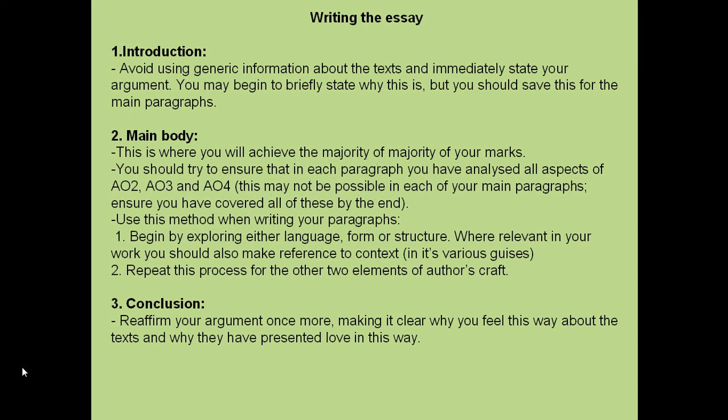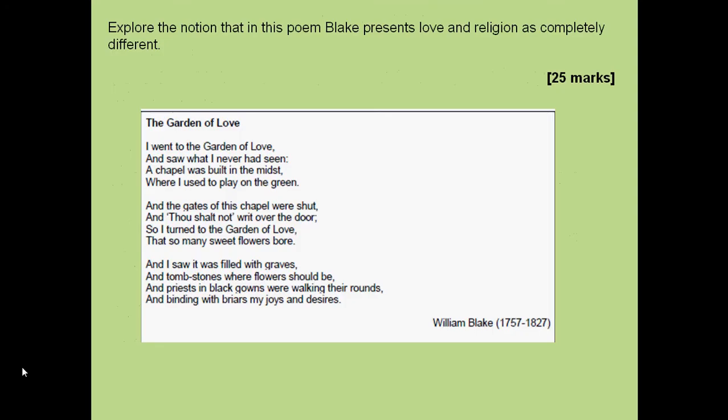So, writing the essay itself: we want to make sure that we avoid being generic, giving some general information. Get on with your argument — say briefly what it is, and save your analysis for the main body. The main body itself will obviously be undertaking a method which you may call PEE or whatever, but it's essentially: state your point, make sure you cover all aspects of the assessment objectives. You may be doing this separately, so you don't have to include all of them in each paragraph, but make sure you cover them by the end. The conclusion: you want to reaffirm your argument once more, making it clear why you feel this way about the text and the argument being created.